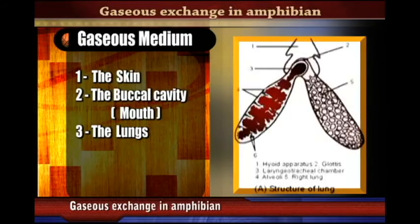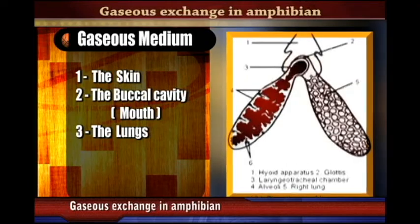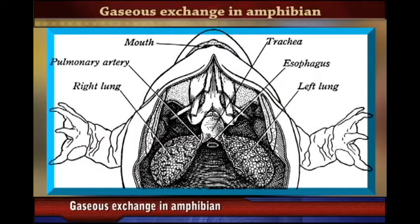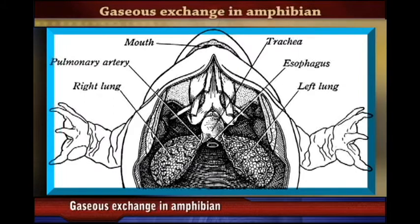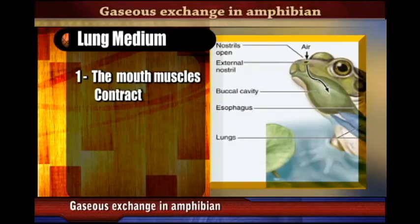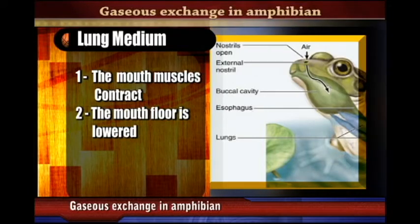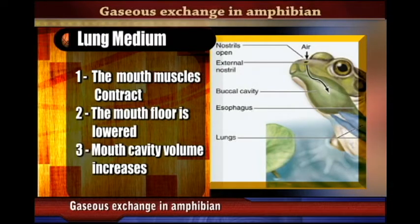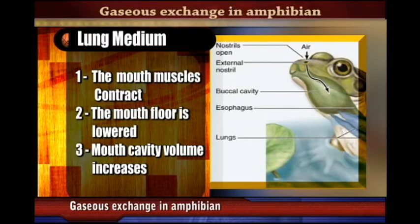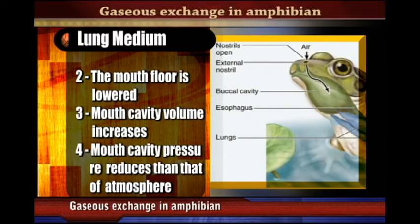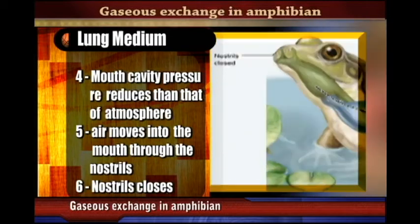The third site of gaseous exchange is the lungs. The system resembles that of the buccal cavity, except that this time air goes to the lungs. The mouth muscles contract, lowering the floor of the mouth cavity, increasing its volume, which reduces the pressure below atmospheric pressure. Air then moves into the mouth via the nostrils, and then the nostrils close.